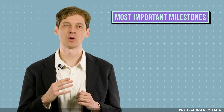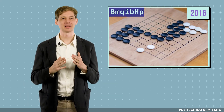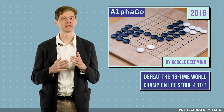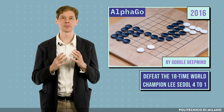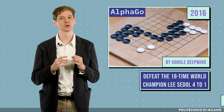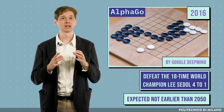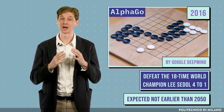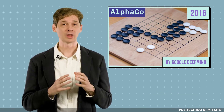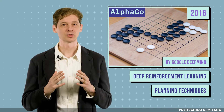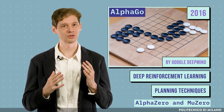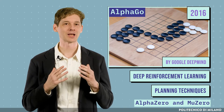Recently, thanks also to the combination with deep learning techniques, reinforcement learning algorithms have achieved some of the most important milestones in the history of artificial intelligence. In 2016, the AlphaGo algorithm developed by Google DeepMind managed to defeat the 18-time world champion Lee Sedol in the board game Go with a score of 4 to 1. This was a very important and unexpected result, as most AI experts forecasted such a result not earlier than 2050, given the complexity of this game, which has more than 10 to the power of 170 board configurations. AlphaGo achieved this exceptional result by combining deep reinforcement learning and planning techniques. Since 2016, researchers have been developing new algorithms like AlphaZero or MuZero, able to defeat AlphaGo with much lower computational costs.